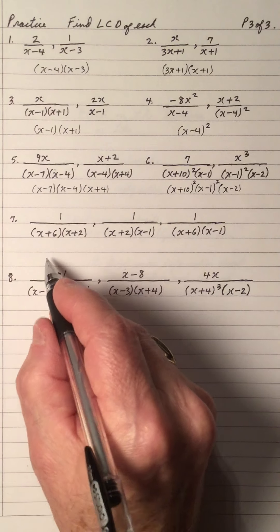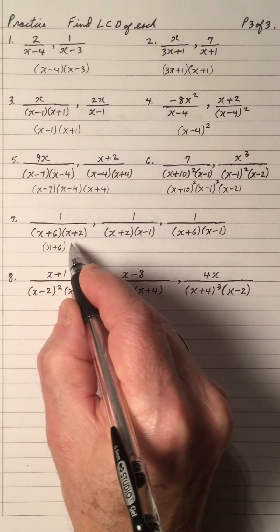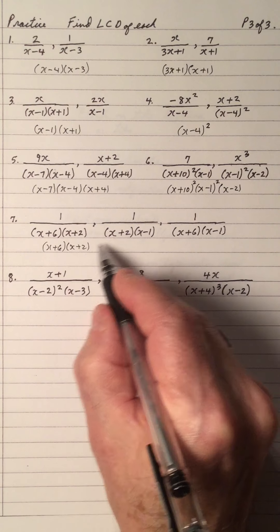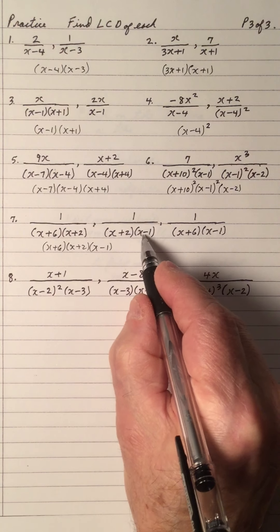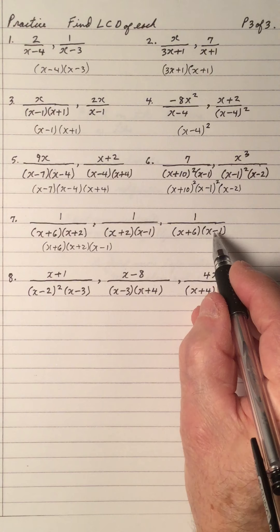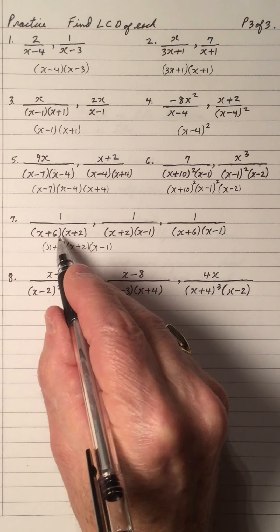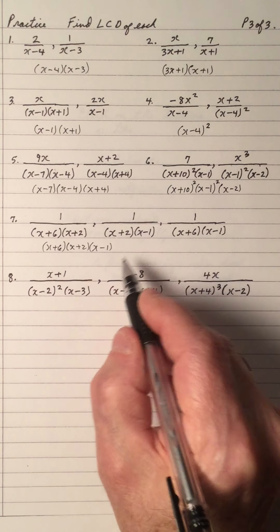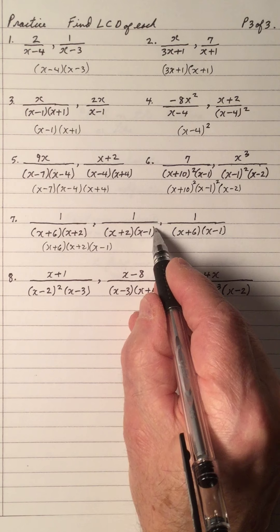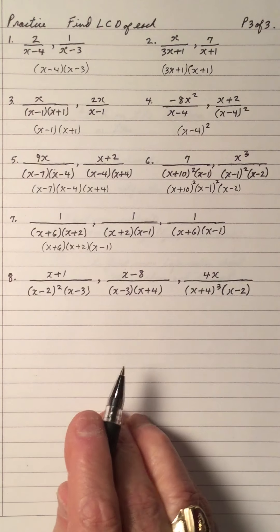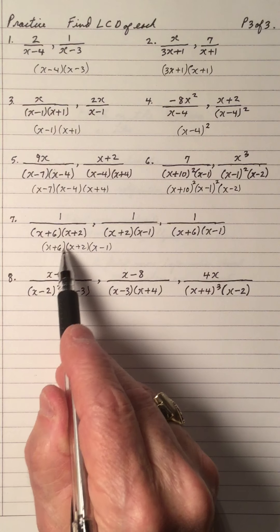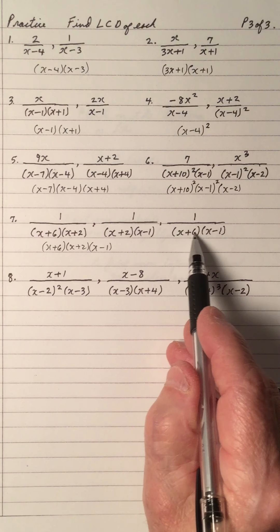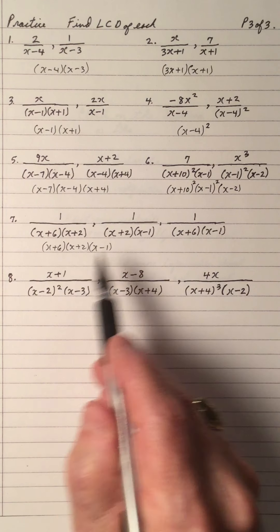Practice number 7: I need (x plus 6), (x plus 2), and (x minus 1). Each is already listed after going through all fractions. The exponent of each factor is 1. So the LCD is (x plus 6) times (x plus 2) times (x minus 1). Each denominator is verified to be present in this LCD.